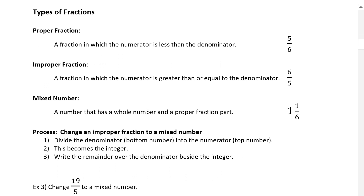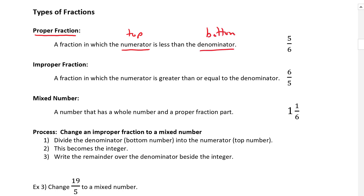Let's talk about the different types of fractions. First of all, we have what's known as a proper fraction. This is a fraction where the numerator, the top number, is less than the denominator, the bottom number. The top number is lower than the bottom number, so this is less than one whole.